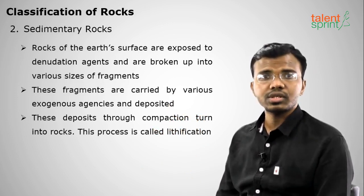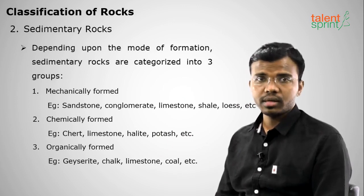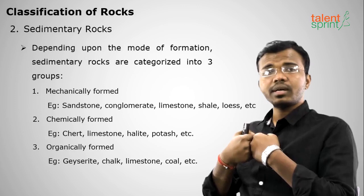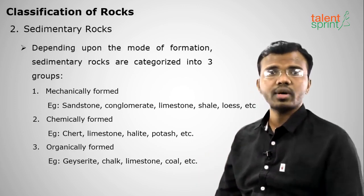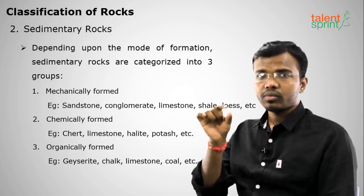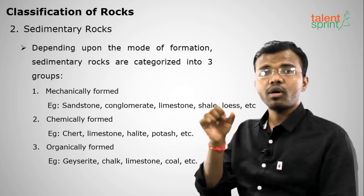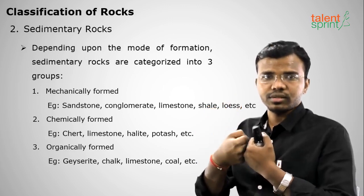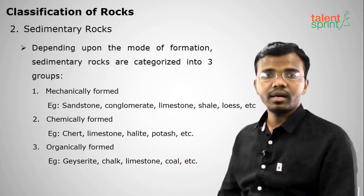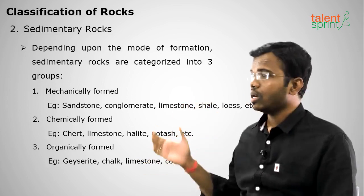There are different types of sedimentary rocks. The first type is mechanically formed — no external agent is involved. Two rocks collide and eventually bind together to form a new rock. Examples of mechanically formed sedimentary rocks include sandstone, conglomerate, limestone, shale, and loess found in deserts.